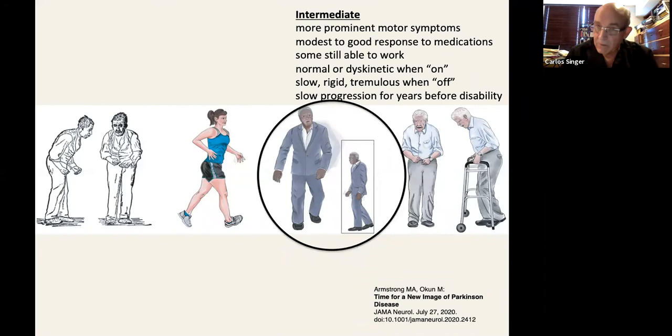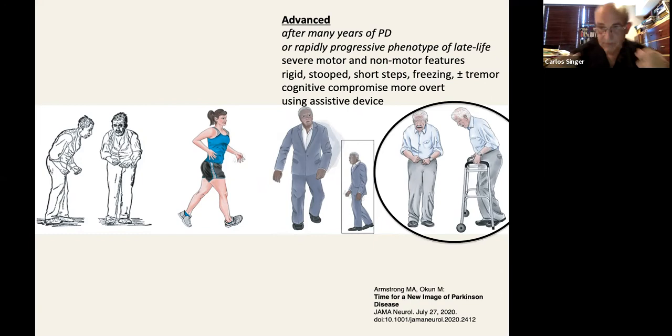Finally, there is an advanced version of the disease. Now, it may occur after many years of the part of what we have described so far. Or there may be a rapidly progressive phenotype of late life. And in either case, there's severe motor and non-motor features, rigidity posture, short steps, freezing. As I said, may or may not have tremor. One may notice more of a cognitive side to the problem. And they're using assistive devices.